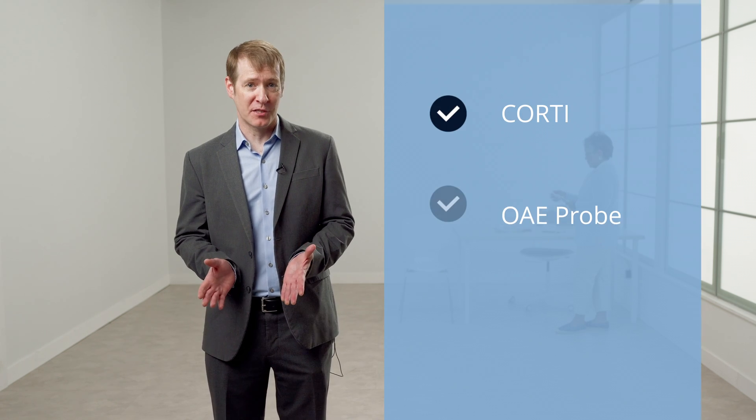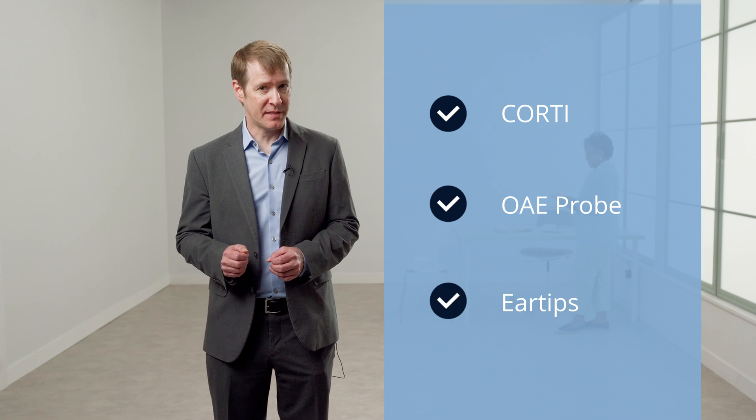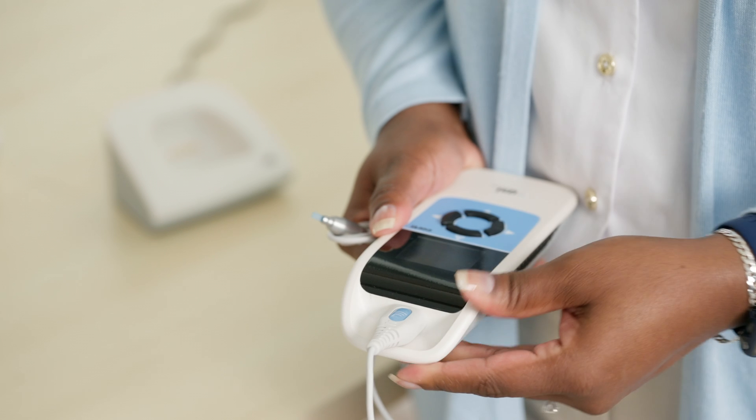To perform OAE testing with the GSI Cordy, first gather the appropriate accessories. You will need the Cordy handheld instrument, the OAE probe, and the appropriate size ear tips. Connect the OAE probe to the Cordy using the HDMI plug. Prior to testing, perform a visual inspection of the blue probe tube to ensure that it is free from debris.